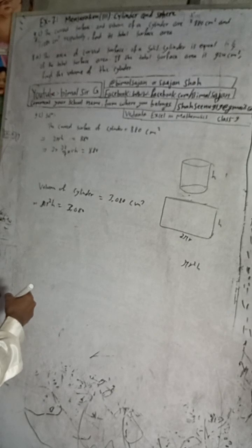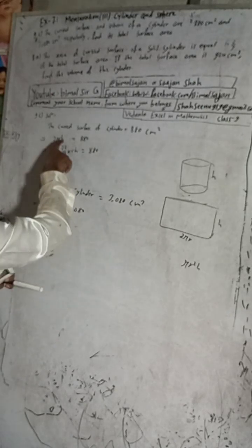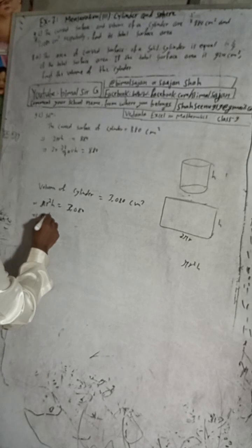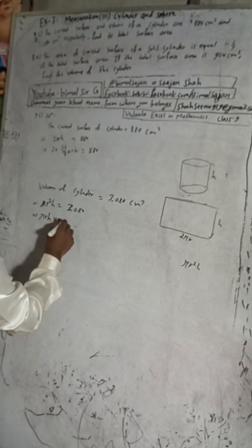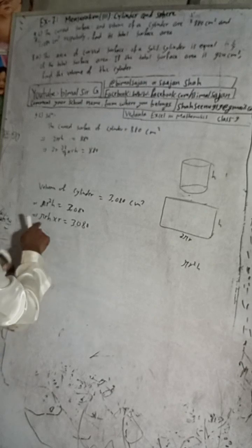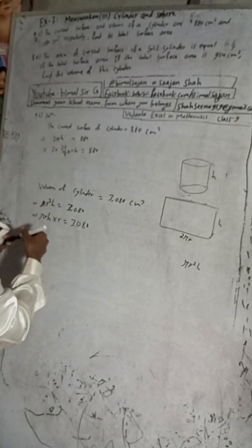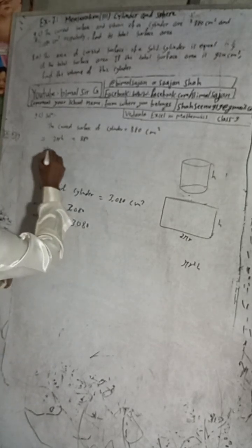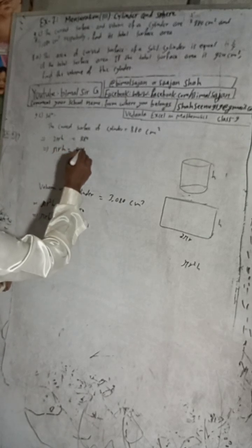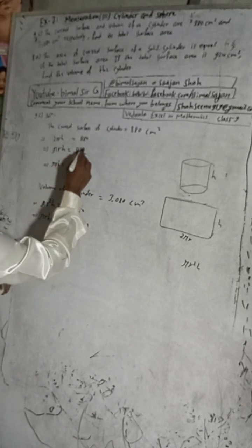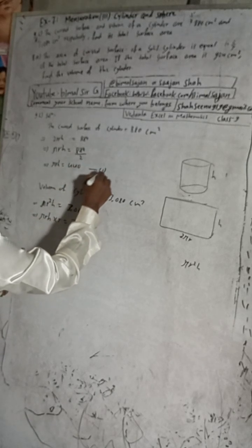From the volume equation πr²h = 3080, we can split it as πrh × r = 3080. Now from the curved surface area equation 2πrh = 880, dividing both sides by 2 gives us πrh = 440. This is equation one.